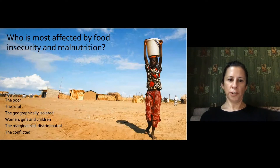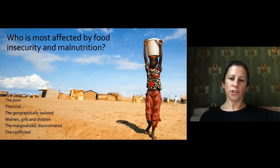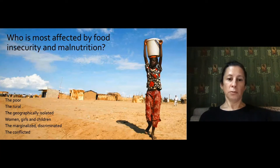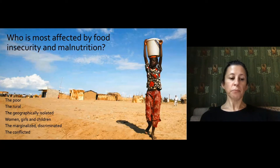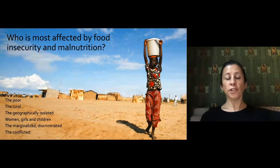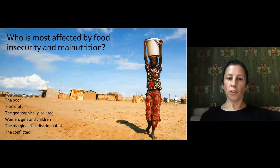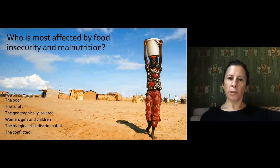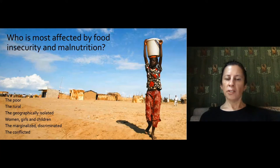Who is most affected by food insecurity and malnutrition? Those who are poor, living in poverty traps, the rural poor, and the urban poor — as urbanization moves more people to urban centers ill-equipped to handle population growth. Also the geographically isolated, women, girls, and children, due to biological needs and their place in some societies — lack of empowerment, voice, and agency. The marginalized, the discriminated, based on ethnicity and tribe, and those living in conflict in fragile countries.